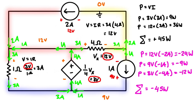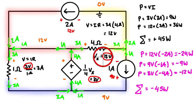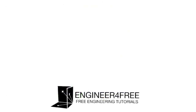That was another example on dependent power sources — specifically a voltage controlled voltage source. Once you determine the dependent voltage from the controlling voltage, you can solve it like any other circuit problem. Thanks for watching, and I'll see you in the next one.